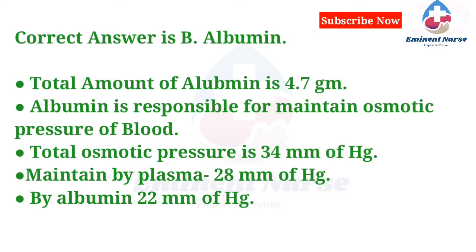Correct answer is B. Albumin. Total amount of albumin is 4.7 grams. Albumin is responsible for maintaining osmotic pressure of blood. Total osmotic pressure is 34 mmHg — maintained by plasma at 28 mmHg, and by albumin at 22 mmHg.